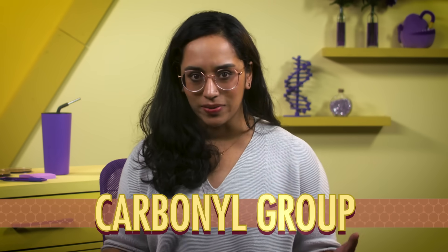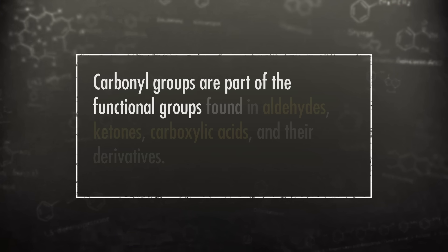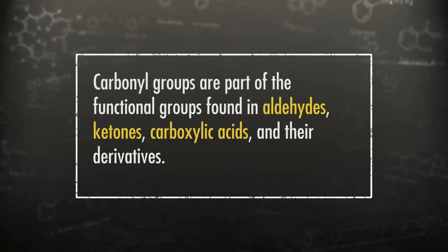Now it's time to look at some organic compounds with a double-bonded oxygen: a carbonyl group. Carbonyl groups are part of the functional groups found in aldehydes, ketones, carboxylic acids, and their derivatives. Let's start with aldehydes and ketones. An aldehyde has a carbon chain on only one side of a carbonyl group, while a ketone has a carbon chain on both sides.